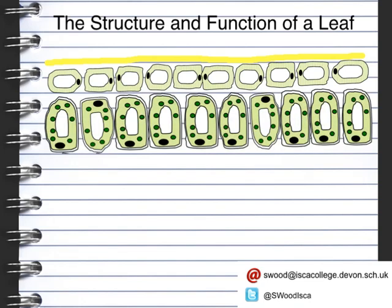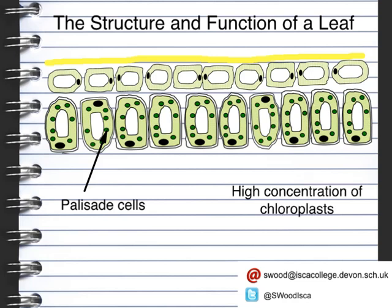The second layer, the palisade layer, is full of palisade cells. You can see these cells are very green because they have a high concentration of chloroplasts — the pigments that allow photosynthesis to happen. Because of their shape, they are able to be tightly packed together, meaning we can fit lots of palisade cells in one place to achieve a higher rate of photosynthesis.